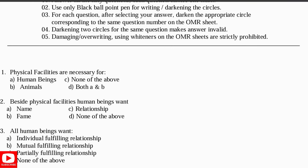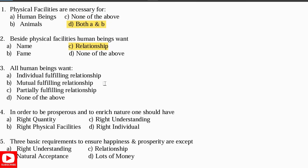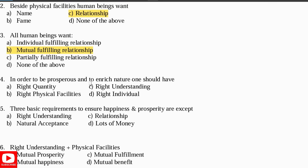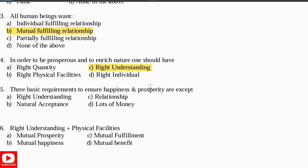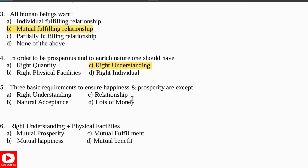Set 2, Question 1: Physical facilities are necessary for what? Answer: Both — that is, for human beings and animals. Question 2: Besides physical facilities, what do human beings want? Answer: All human beings want mutually fulfilling relationships. Question 3: In order to be prosperous and to enrich nature, one should have what? Answer: Right understanding. Question 4: Three basic requirements to ensure happiness and prosperity are — except: lots of money.